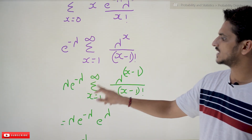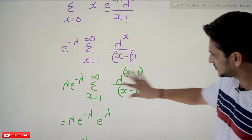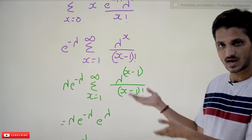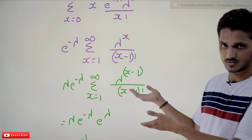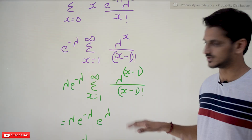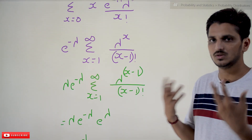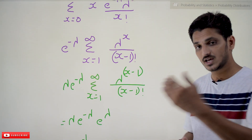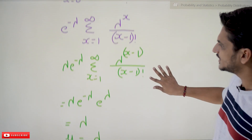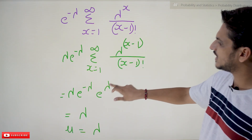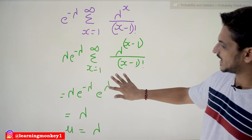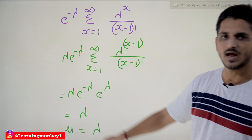The sum Σ λ^(x−1) / (x−1)! is the expansion of e^λ — in the Taylor series for e^x, replacing x with λ gives exactly this sum. So we substitute e^λ in place of the summation: λ · e^(−λ) · e^λ. Since e^(−λ) and e^λ cancel, we are left with λ. Therefore the expected value, the mean, is λ.